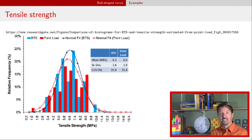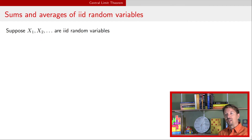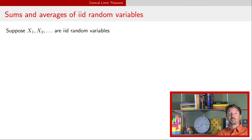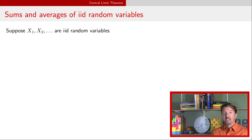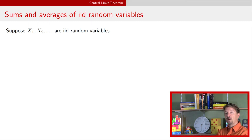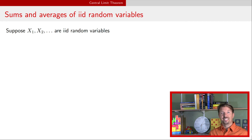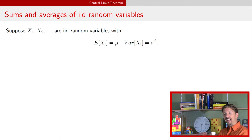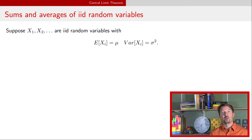Let's talk about what the central limit theorem actually says. As a reminder, the central limit theorem is talking about sums and averages of iid random variables. IID stands for independent and identically distributed. What it means to be identically distributed is that every individual random variable has exactly the same distribution. To be independent means that knowing some set of those random variables tells you nothing about the remaining set. Because these random variables are identically distributed, they have the same mean and the same variance: the expectation of Xi for all i is equal to mu, and the variance of Xi for all i is equal to sigma squared.